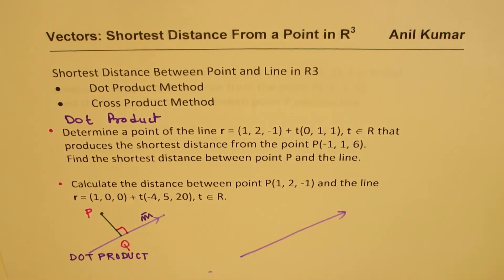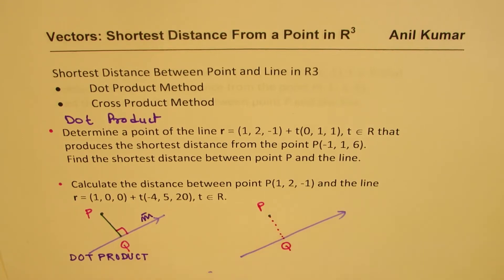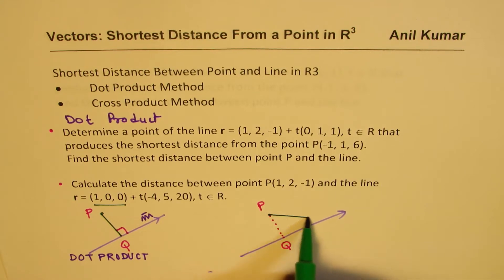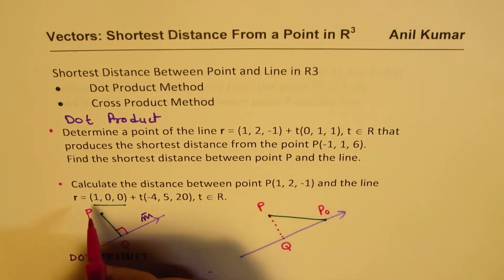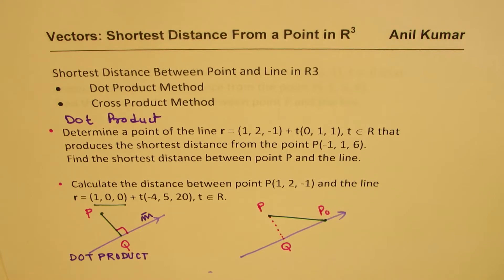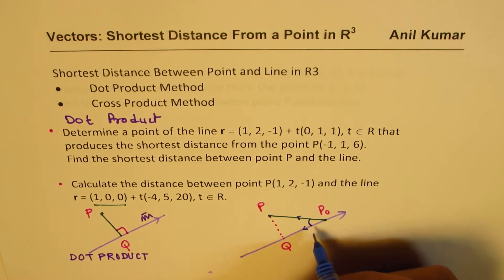Let's say again we have a line and an external point. In that case, from the external point P we do not find point Q. We pick up a point given to us — call it P0. Now the direction of PP0 and the direction of the line have an angle in between. Let us say this angle is alpha. In that case, what is PQ, which is the shortest distance? We can see that this distance D from P to Q will be equal to the absolute value of PP0 times sin of alpha — that is the opposite side.